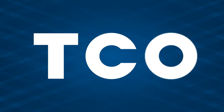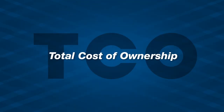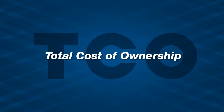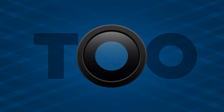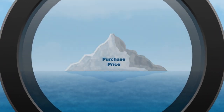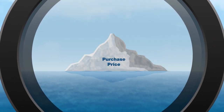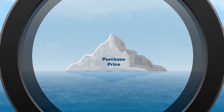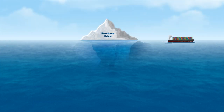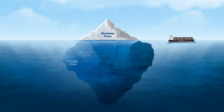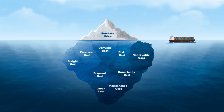T.C.O. — Total Cost of Ownership. It means looking deeper than purchase price to understand the full financial impact of supply chain processes and products used in your business: hidden costs that can have a major impact on productivity and P&L.